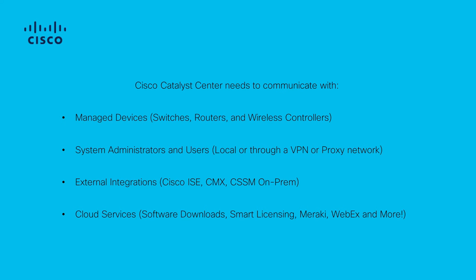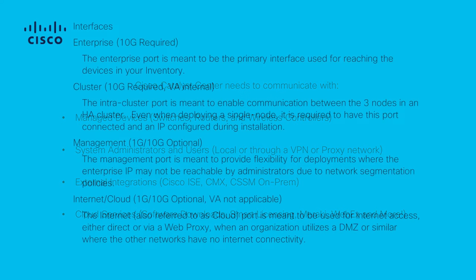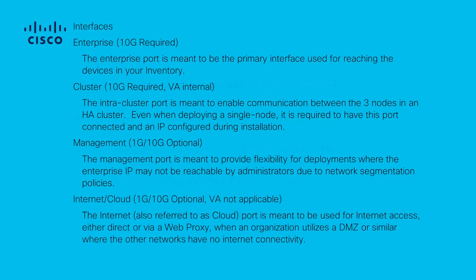Let's start by reviewing these interfaces and their intended use. The Enterprise interface is a 10 gigabit port on the physical appliance and is mapped to the first virtual adapter in the virtual appliance. It is meant to be the primary interface used to communicate with your devices, and in many deployments this may be the only interface used for all network communications.